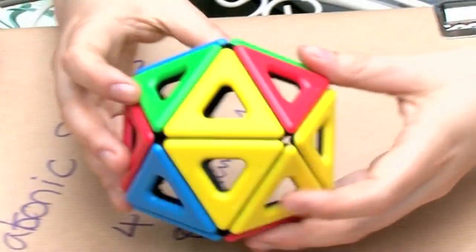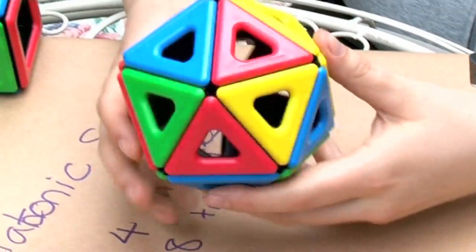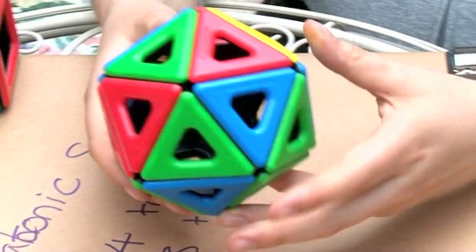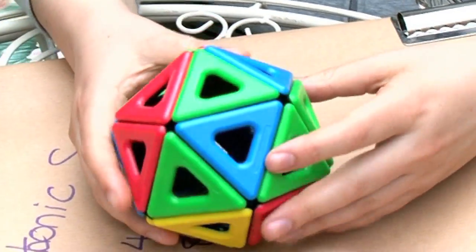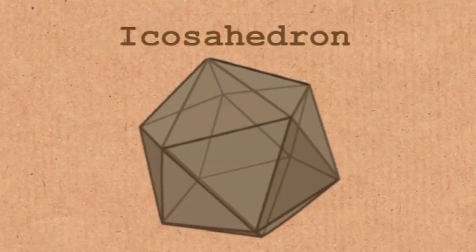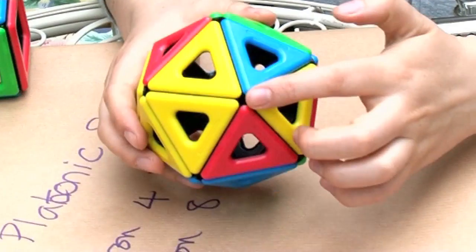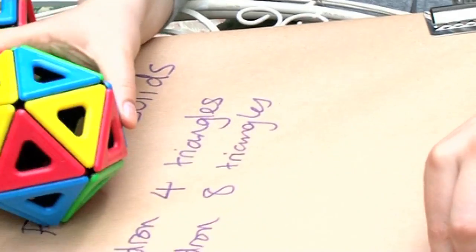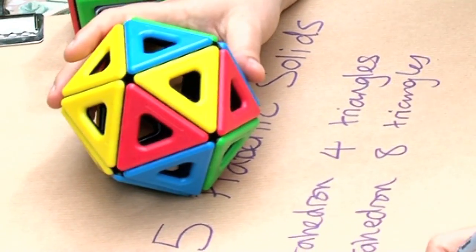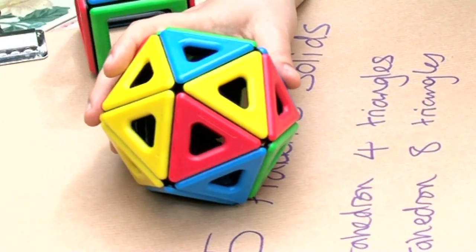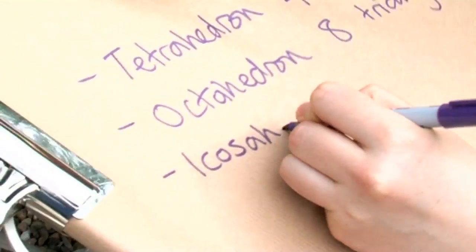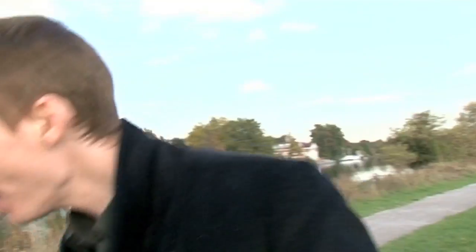This is one of my favourite Platonic solids. This is called an icosahedron. You can see every single corner has got five triangles meeting at it, all of the faces are triangles, and in fact you get 20 triangles. So this is an icosahedron.